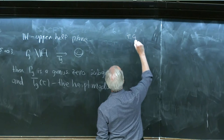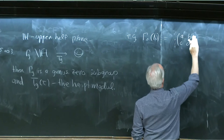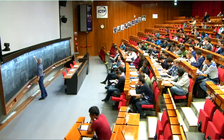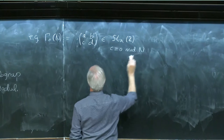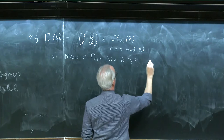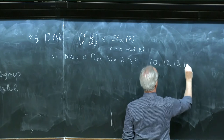If you consider Γ_0(n), consisting of elements of the modular group such that c is congruent to zero mod n, then this is genus zero for n equals 2, 3, 4, up to 10, and then 12, 13, 16, 18, and 25, if memory serves me right — but for no other values of n.